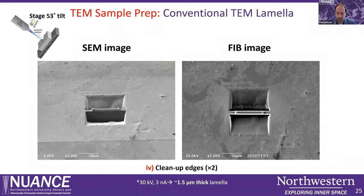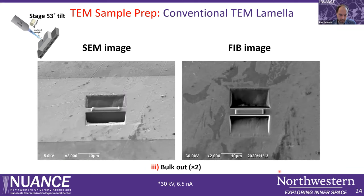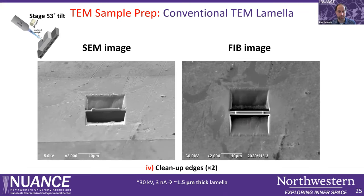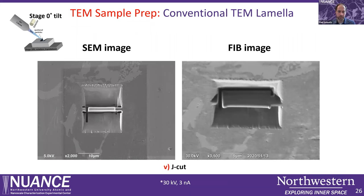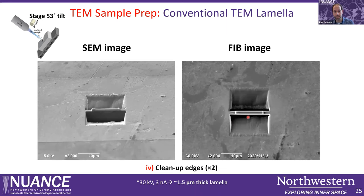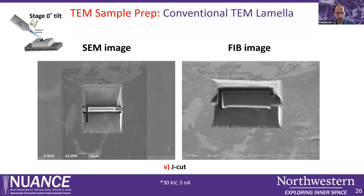We clean up the edges at higher currents, sputtering more material away, and there is some redeposition — amorphous material that can adhere to the sidewall — so we mill that away at lower currents in a cleanup step. We typically leave the sample about one and a half micrometers thick because we also need to cut it underneath. This process is called a J-cut, because it has the shape of a J where you mill three rectangles so that one side is left dangling. I recommend cutting the sample to one to one and a half micrometers or thinner.